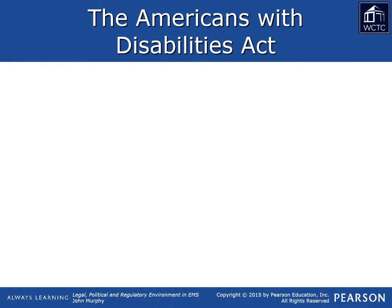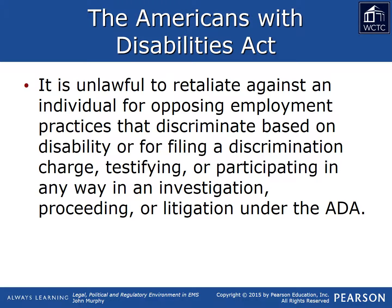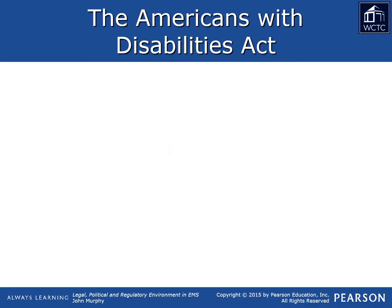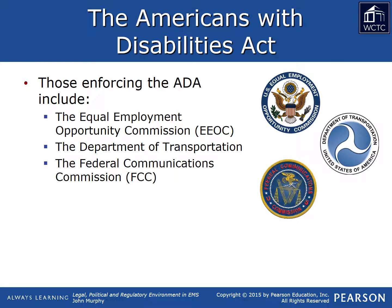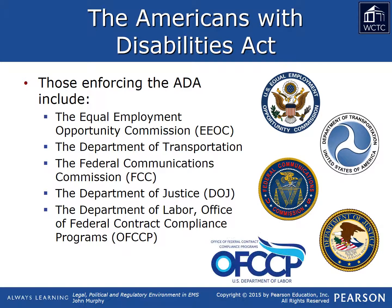As with other similar laws, it is illegal for an employer to retaliate against an individual for opposing employment practices that discriminate based upon disability, or for filing a discrimination charge, testifying, or participating in any way in an investigation, proceeding, or litigation under the ADA. The ADA is a broad law that is enforced by several federal agencies, depending on the type of violation that occurs. Some of these agencies include the EEOC, DOT, FCC, DOJ, and OFCCP.